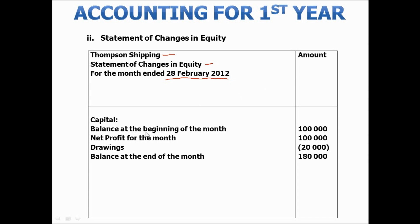So let's have a look at the breakdown. At the top of the report we start with the balance at the beginning of the month, then we would add the net profit for the month, which is brought down from the income statement, then we'll subtract any drawings, and this will then bring us to the total of the statement of changes in equity.